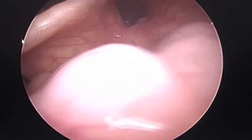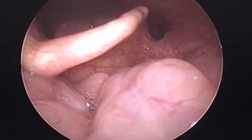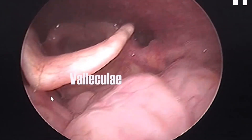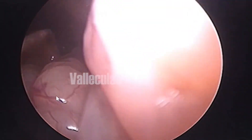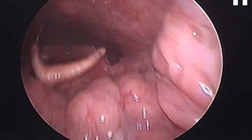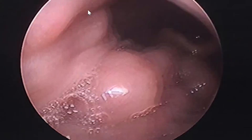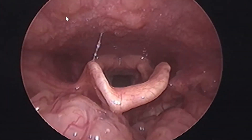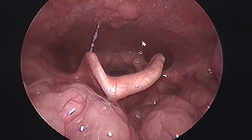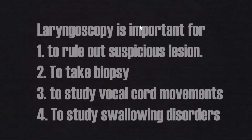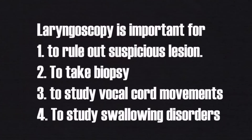The vallecula is a hidden space behind the epiglottis, between the tongue and the epiglottis, with prominent lymphoid follicles visible here. It is essential not to miss any growth or foreign body lodged in the vallecula. These are the tonsils, which have crypt-like structures and sometimes white debris over them, known as tonsil stones. You can also see the posterior pharyngeal wall, which had some granulations.